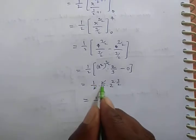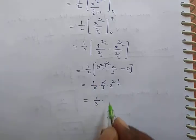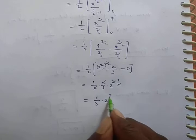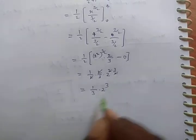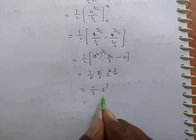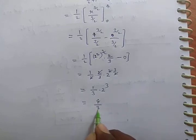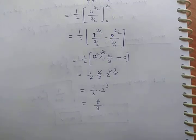The 2s cancel. Here we have 1 × 1/3. These 2s cancel, we have 2^3. Which is equal to 2^3 is 2 × 2 × 2, 3 times, that is 8 ÷ 3. This is the answer. Thank you.